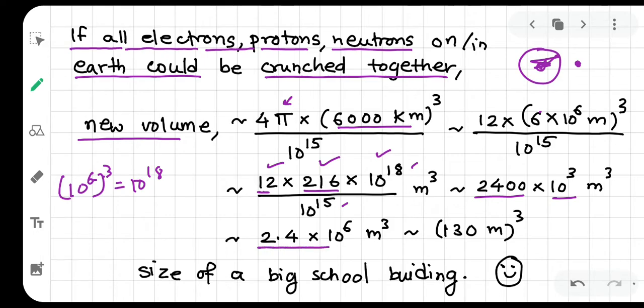This is 2.4 into 10 to the power 6 meter cube, which is 130 meter cube, 130 meters means nearly 500 feet. So 500 feet by 500 feet by 500 feet cube - that much volume will be formed. This means the size of a big school building. Imagine how much empty space there is in an atom.